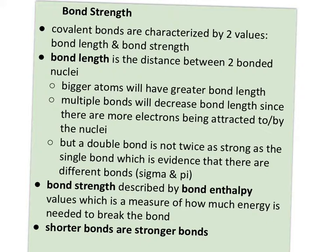However, it's important to know a double bond is not twice as strong as a single bond, and that's evidence that there are different kinds of bonds. Remember sigma and pi bonds — think of the hot dog surrounded by the bun when you have a double bond. That first single bond is stronger than that second bond that forms around it.